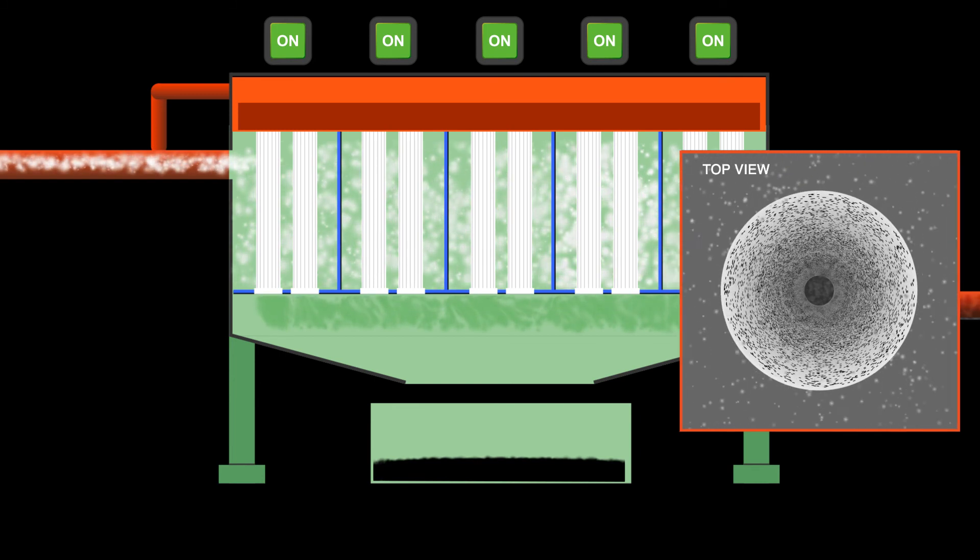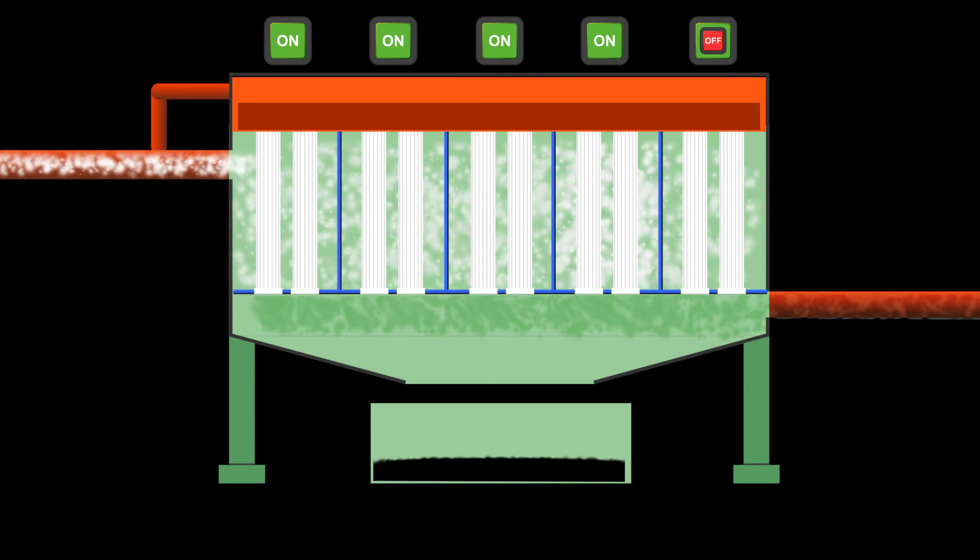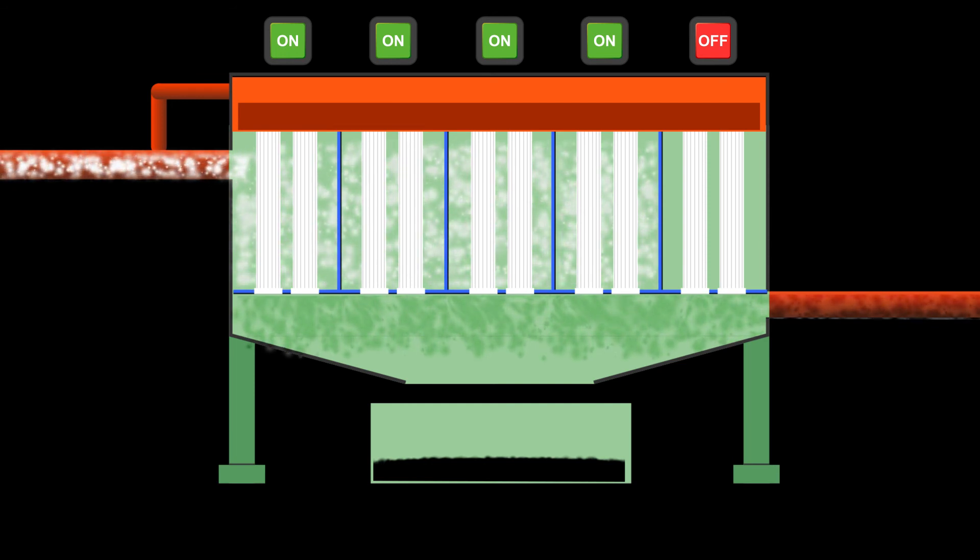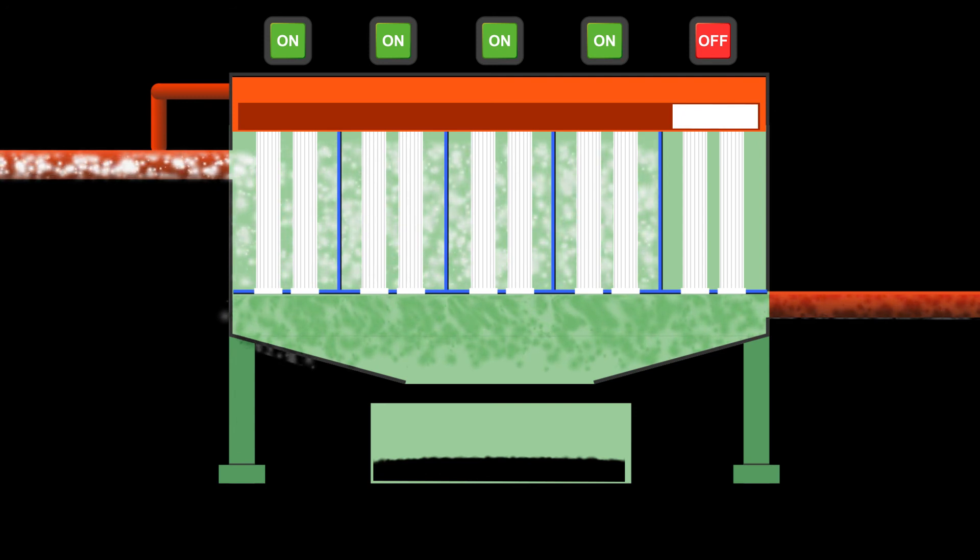These types of reverse air baghouses have to be taken offline for cleaning. Thus they are often divided into compartments so one section at a time can be cleaned. Generally, an entire compartment is pressurized with a system fan in the reverse direction of filtration.